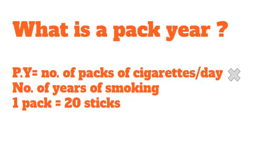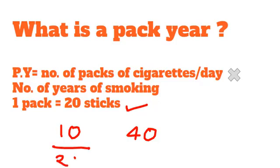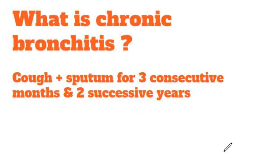For example, suppose a patient smokes 10 cigarettes for 40 years. You have to know one simple thing: in one pack, there are 20 sticks of cigarettes. So in this case, the patient is consuming 10 cigarettes, that means 10 divided by 20 — the patient is having half a pack of cigarettes per day for 40 years. So his pack year would be 20 pack years.